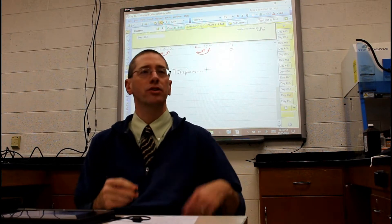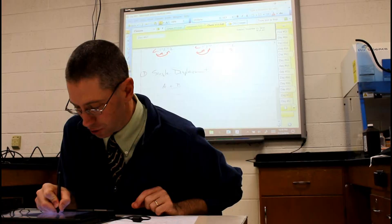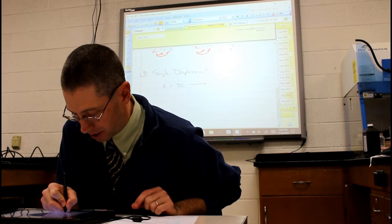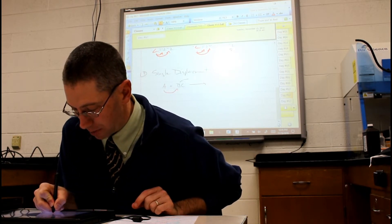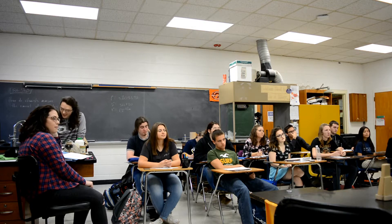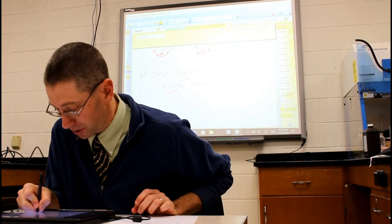A single displacement reaction uses a single element, but it reacts it with a compound. You have a single element A, and it's reacting with compound BC, and what happens is element A comes in and kicks element B out of the compound and takes its place. So one product is AC — and what else? B. That's right, because you can't just get rid of B. It just gets kicked out by itself.